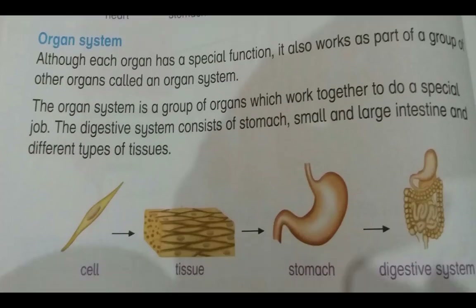Although each organ has a special function, it also works as part of a group of organs called an organ system. The organ system is a group of organs which work together to do a special job. For example, the digestive system consists of the stomach, small and large intestine, and different types of tissues.